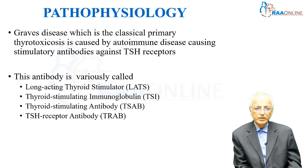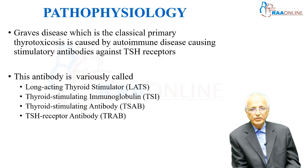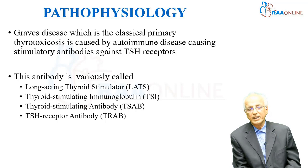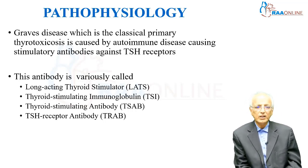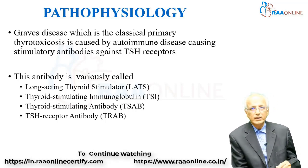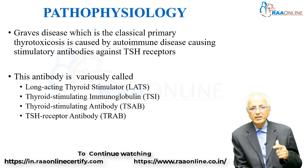Now coming to Graves' disease — this is a classical primary thyrotoxicosis caused by autoimmune disease. Autoimmune antibodies against TSH receptors act as stimulatory antibodies and cause thyrotoxicosis. This antibody is variously called long-acting thyroid stimulator, thyroid stimulating immunoglobulins, thyroid stimulating antibodies, or TSH receptor antibodies — it is a stimulatory antibody against the TSH receptor.